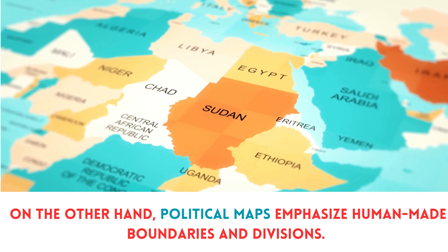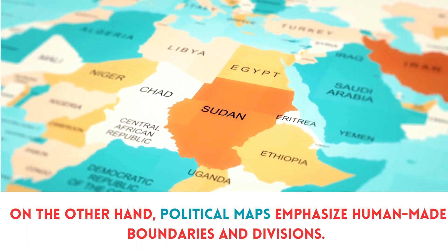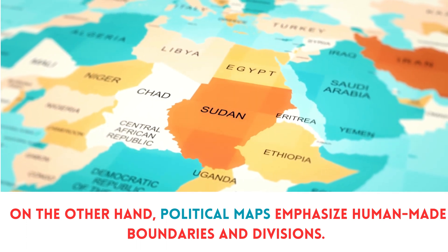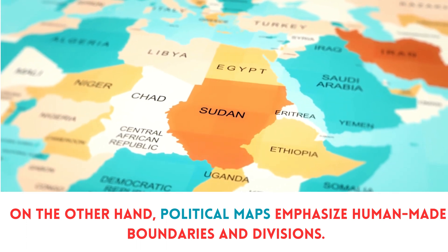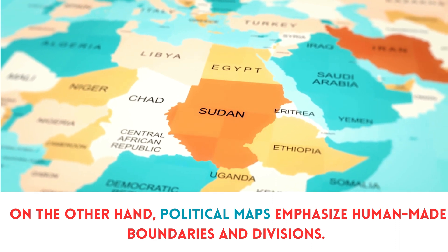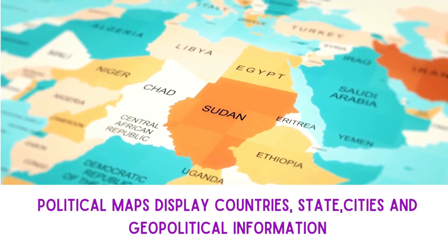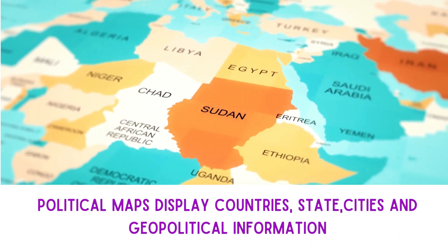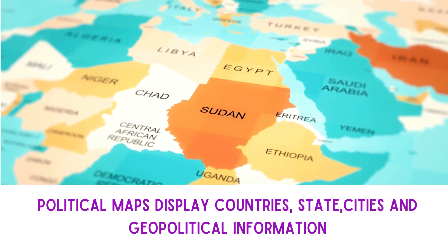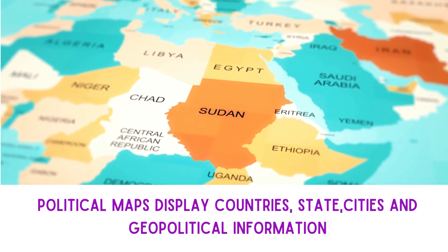On the other hand, political maps emphasize human-made boundaries and divisions. Political maps display countries, states, cities, and geopolitical information.